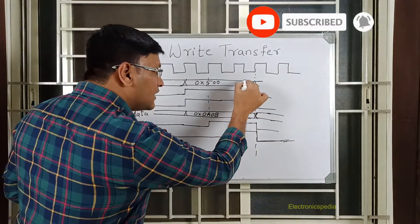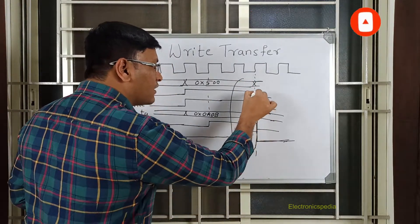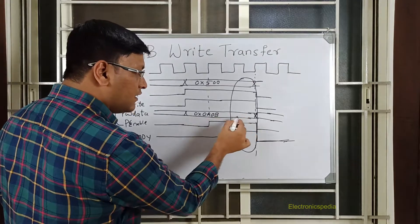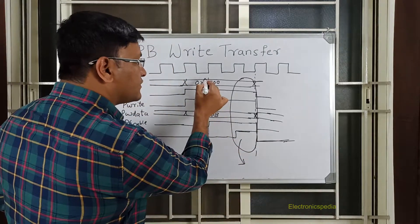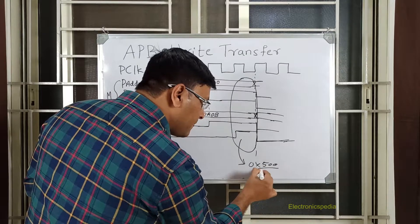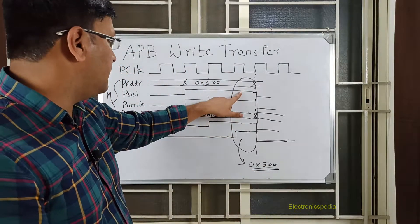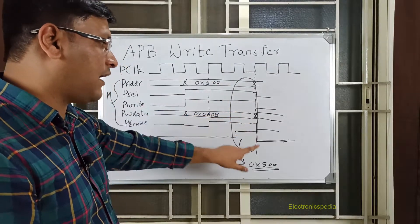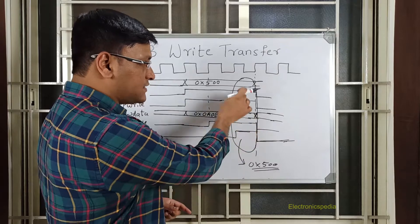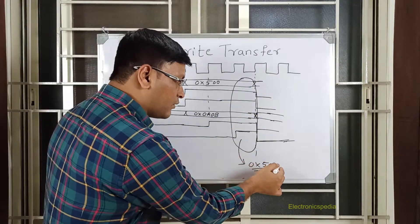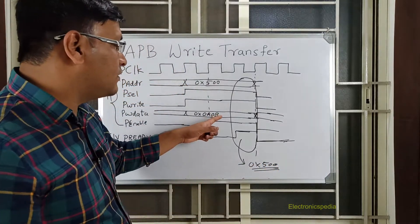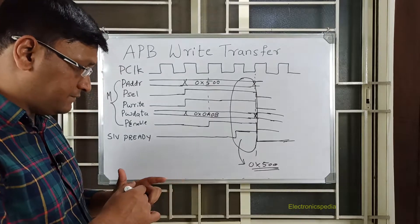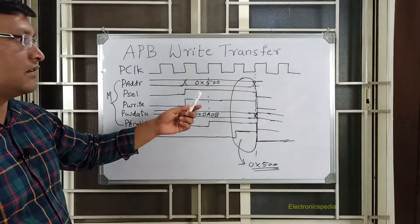Basically, in that particular clock cycle window, whatever data was present will be written into offset 0x500. The transaction is a valid transaction only when PSEL is high, PENABLE is high, and PREADY is high — all at the same time. The data present during that window is what will be written into the address. You cannot change the data during that window; only the data present in that window will be written.